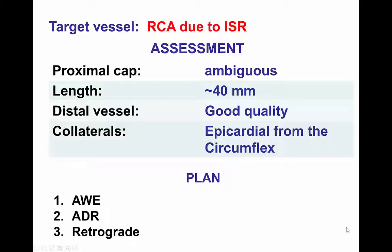In summary, we have a patient with an RCA CTO — an ambiguous proximal cap, 40 mm length, good quality distal vessel, and epicardial collateral from the circumflex. As a result, our plan was to perform antegrade wire escalation in multiple views to sort out the ambiguity. If the wire went subintimal, proceed with dissection re-entry, and leave retrograde as a third option.